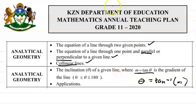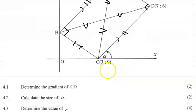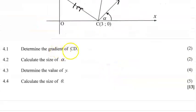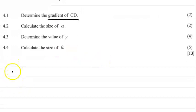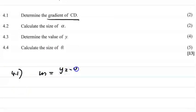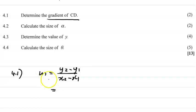The first question, 4.1, is to determine the gradient of CD. The gradient formula is m = (y₂ − y₁) / (x₂ − x₁). Let's look at line CD — as you can see it goes upwards to the right, so it should give us a positive gradient.